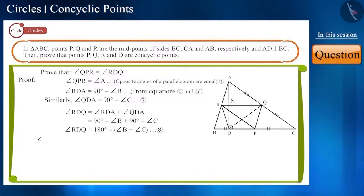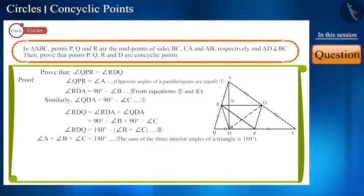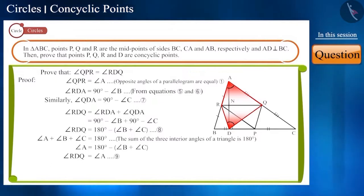Friends, we know that the sum of the three interior angles of a triangle is 180 degrees. So, if from 180 degrees the sum of the measure of these two angles is subtracted, then angle A is obtained. So, in equation 8, we can write it as angle A. We got angle RDQ equal to angle A. Let's call it equation 9.